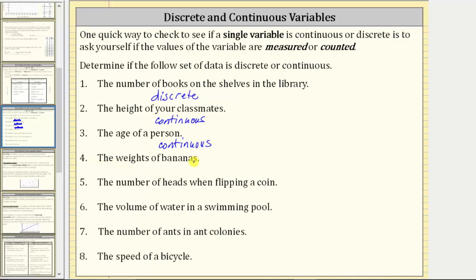Number four, we have the weights of bananas. Weight is measured. This is continuous data. The weights of bananas can take on any value over a particular interval. Number five, the number of heads when flipping a coin. We count the number of heads, and therefore this is discrete data. The number of heads can only take on whole number values over a particular interval, which is another reason why this is discrete.